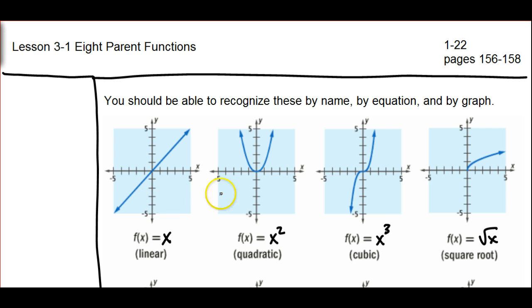Let's take a look at the first four which are pictured here. Keep in mind that the goal for students should be to be able to recognize these simply by name or by equation or by graph. So all three of those pieces of information should be something that students should be memorizing throughout the chapter. When you see the graph of a line, you should know that the equation for that is simply y equals x and that it's called a linear equation and a linear graph.